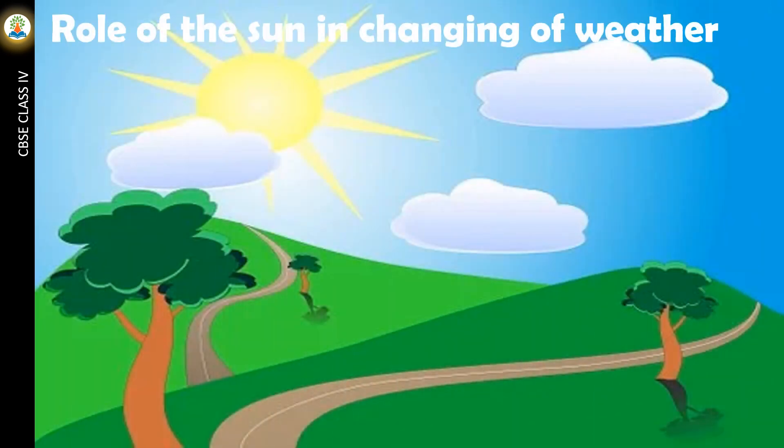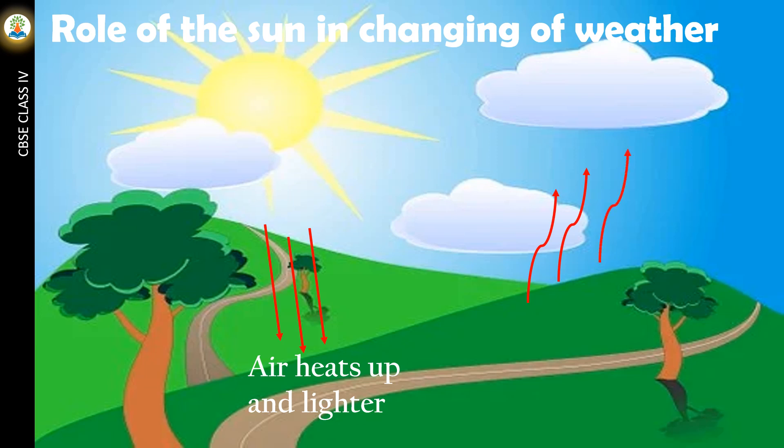Due to the heat of the sun, the air heats up and becomes lighter. The warm and light air rises up quickly. Its place is occupied by cold air, which is heavier. This movement causes the weather of a place to change.